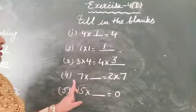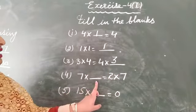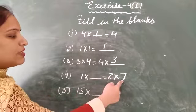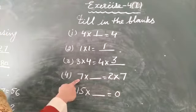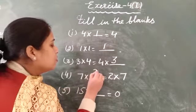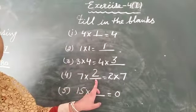Next is 7 multiplied dash is equal to 2 multiplied 7. Now on right side, two numbers are there. 2 and 7. On left side, out of that two, we have only one number that is 7. So 2 is missing, write it over here.